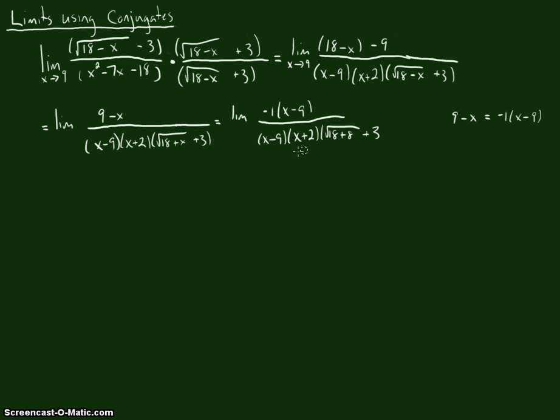That should be 18 plus x there. There we go. So accompanied by that conjugate factor, the x minus 9s are going to cancel out, or more appropriately, we're going to replace the function we have with a new function that doesn't have the x minus 9 factors in it.